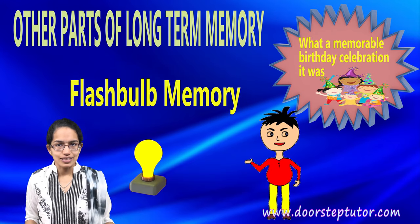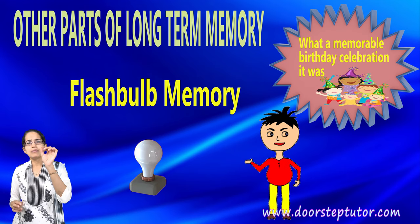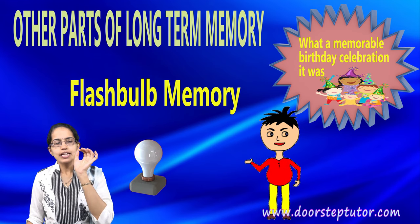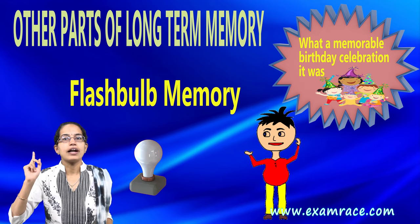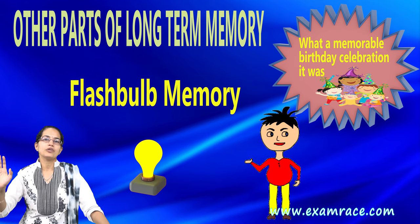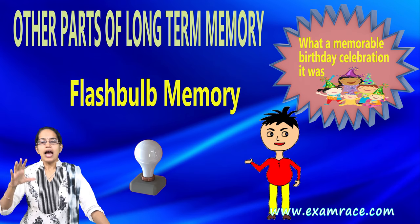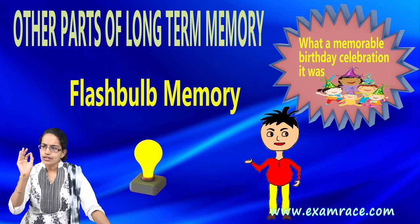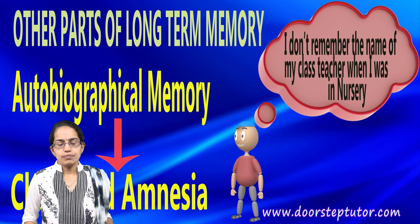Besides these, there are three other interesting memories in long-term memory. The first are flashbulb memories. Flashbulb memories are very detailed — images are frozen or imprinted into your mind and tied to specific events. For example, a birthday celebration that happened only once in your childhood becomes a kind of flashbulb memory. It's frozen into your mind and you remember it very well, retaining much more minute details of what happened during that time.